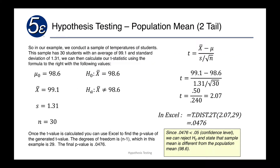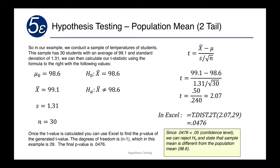The first thing we need to know is how to set up our hypothesis test. We conduct a sample of temperatures of students and the sample has 30 students with an average temperature of 99.1 and a standard deviation of 1.31. We then calculate our t-statistic using the formula: t equals x-bar, which is our sample mean, minus mu, our expected population mean, divided by the sample standard deviation divided by the square root of n, the number of observations.